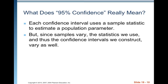So what does 95% confidence really mean? Each confidence interval uses a sample statistic to estimate a population parameter — in this case, we use p-hat to estimate p. But since samples vary, the statistics we use and thus the confidence intervals we construct vary as well.